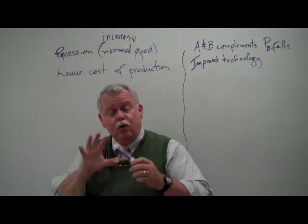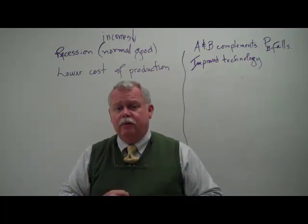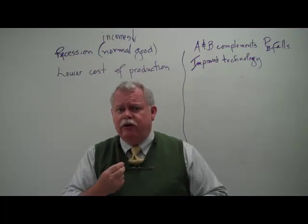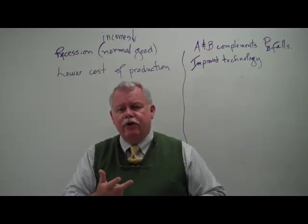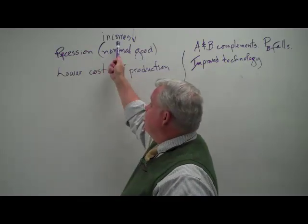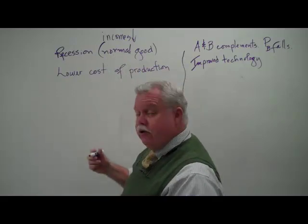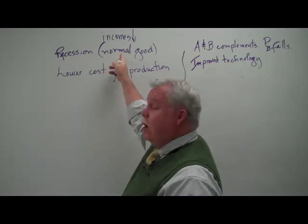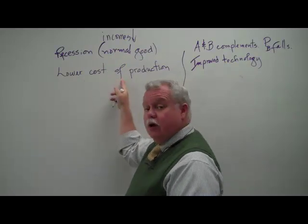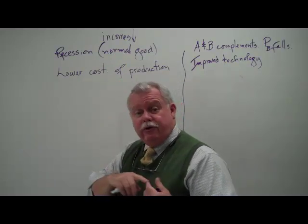A recession means that incomes fall. When we see the word incomes, two things should come to mind: one, we're talking about the demand curve moving, and two, we need to know — is this a normal good or an inferior good? In this example, the recession decreases incomes and we're talking about a normal good, so the first thing that's going to happen is a decrease in demand. We also see that a lower cost of production is going to increase supply.